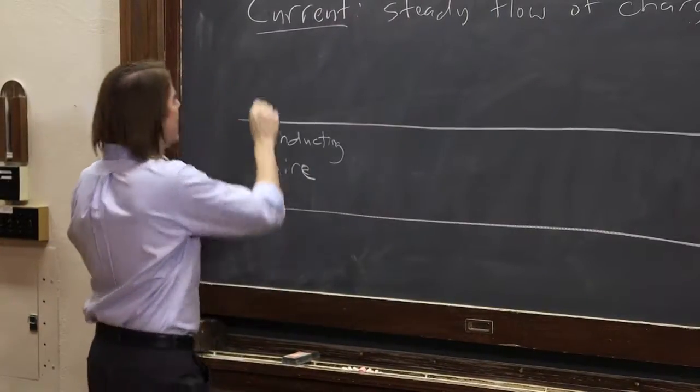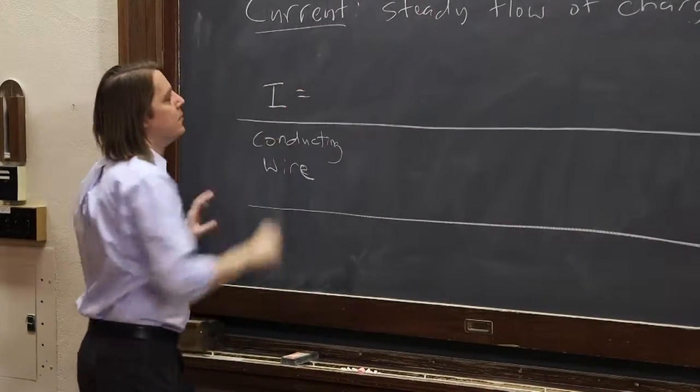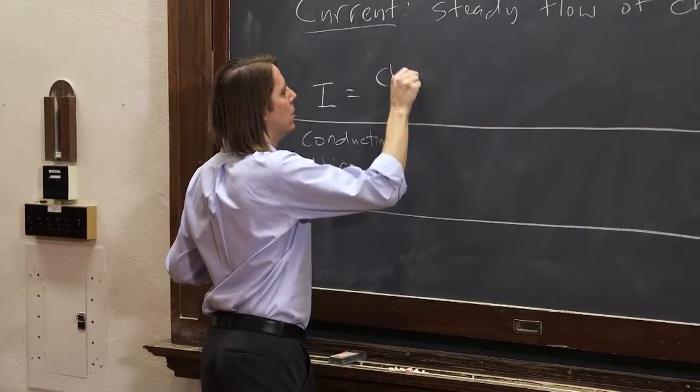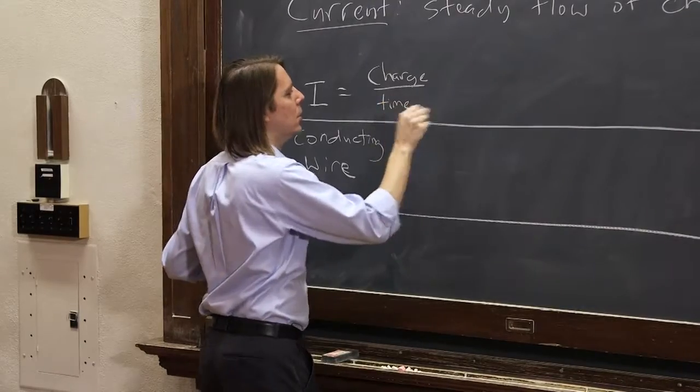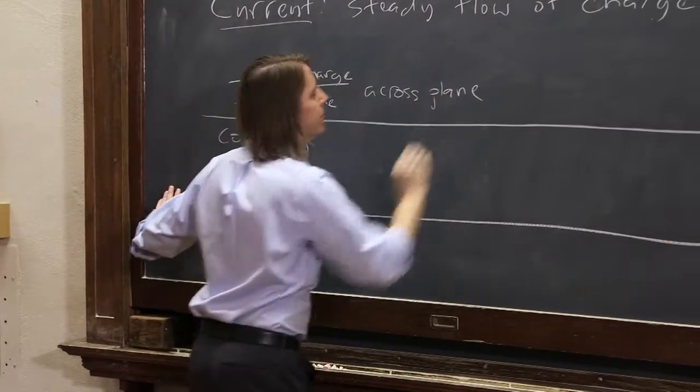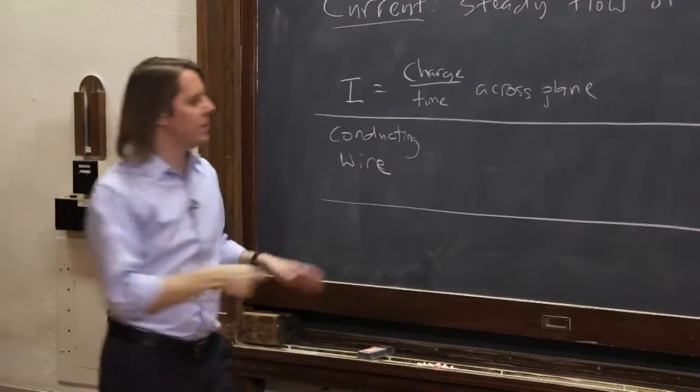So current, the symbol we use is I. And mathematically, the way you think about current is it's the charge per unit time across a plane. So if I look at a cross-section of the wire, like this,